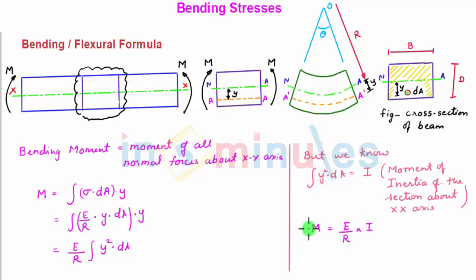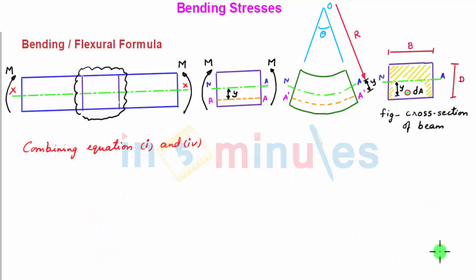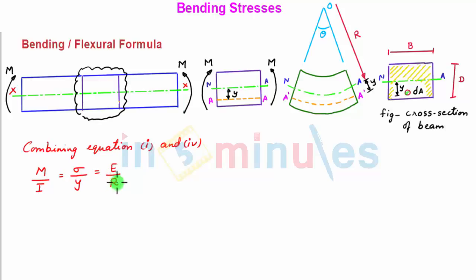Taking I to the left-hand side gives M/I = E/R. Let this be equation 4. Combining equation 1 and equation 4, we can write the flexural formula as M/I = σ/Y = E/R. This is the flexural formula.